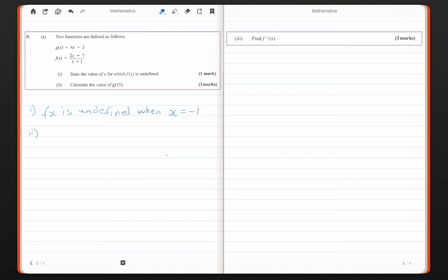And then you plug that answer now into the function g. So f of 5 is equal to 2 times 5 plus 7 divided by 5 plus 1, which is going to be 17 over 6. All right. Simple enough.